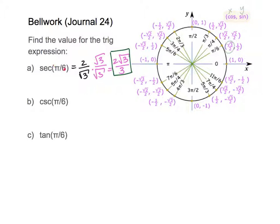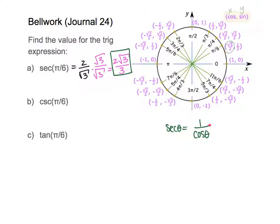So remember, reciprocal trig is where we flip the trig values for sine, cosine, or tangent. Secant can also be written as 1 over cosine theta. But this just means the same as flipping cosine — when you have 1 over that, that's just flipping this value.